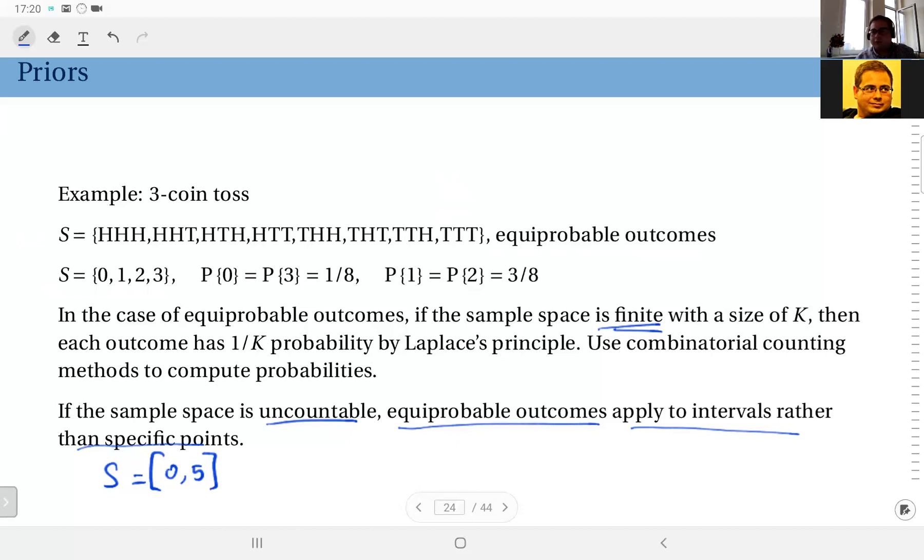For instance, the outcome could be 3.5, it could be 2.74, it could be pi, it could be any real number between 0 and 5. So it's not countable. I cannot list the possible outcomes. Therefore, I cannot assign individual probabilities to each of them. This is not a discrete sample space.